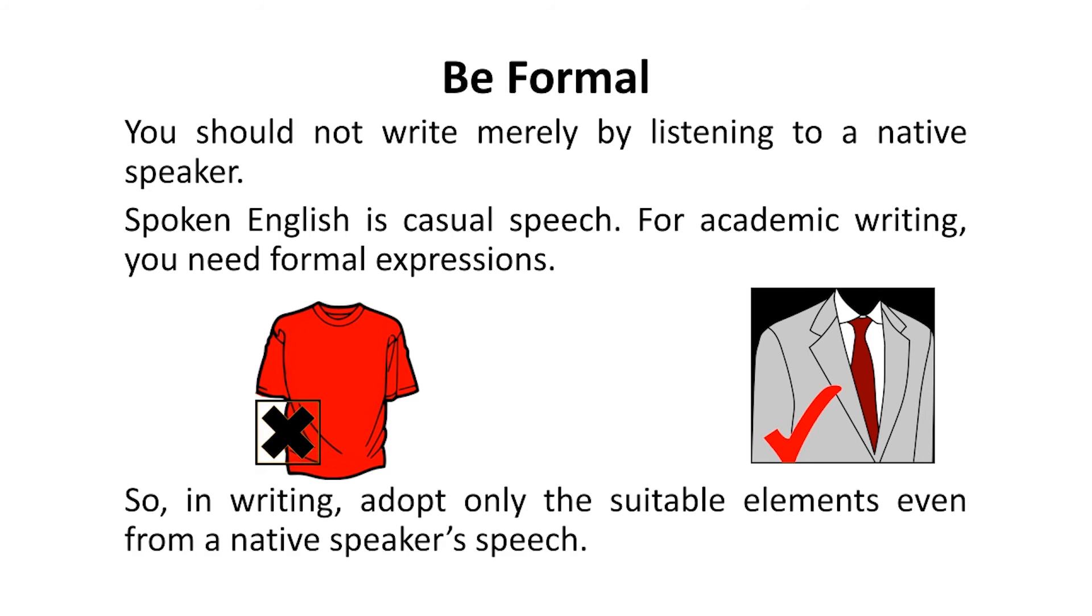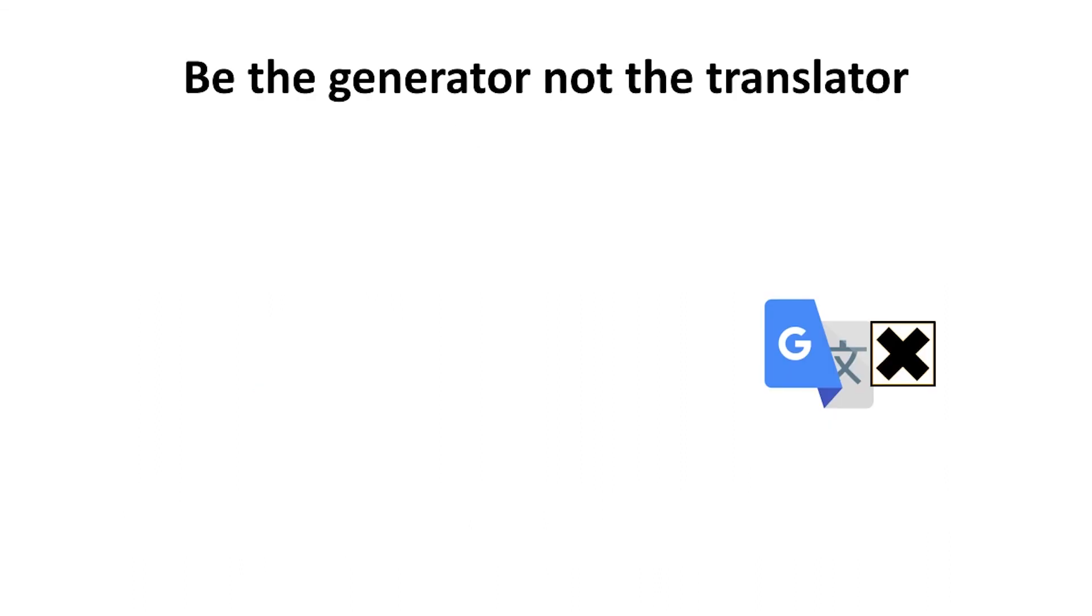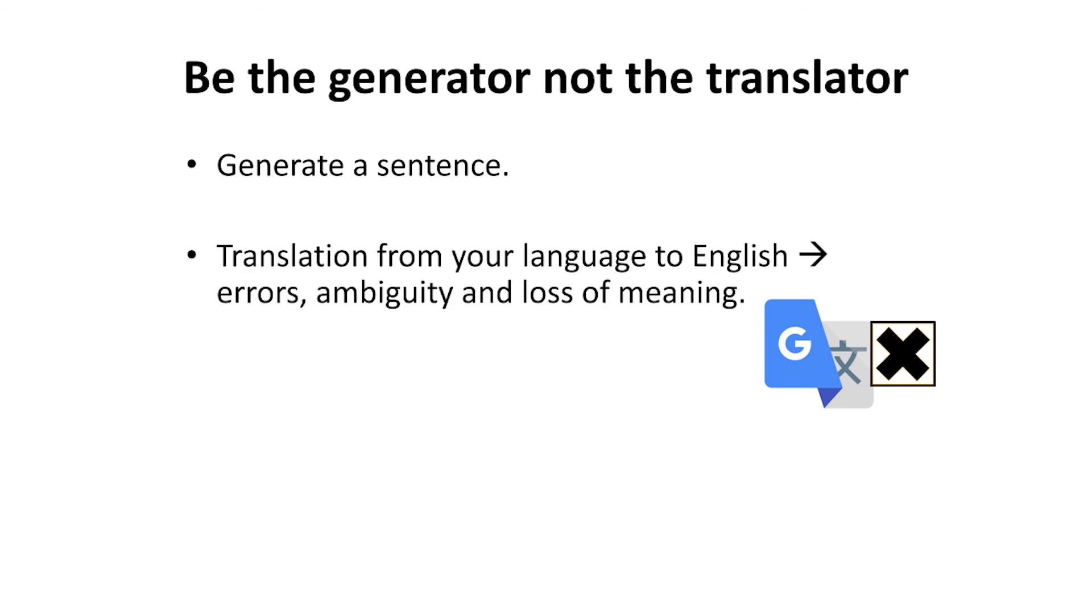Next point is: be the generator, not the translator. You are supposed to generate a sentence. You know, if you prefer to translate from your language to English, instead it is likely to invite errors, ambiguity, and loss of meaning. So just try to think in English. Don't try the translation process. Don't allow the process of translation in your mind.